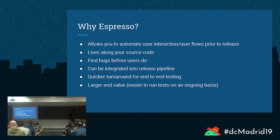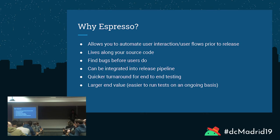And here comes the why-Espresso. For a couple of different reasons: it allows you to automate user interaction flows before release — in an ideal world, you can catch any bugs or issues prior to release. Secondly, it lives alongside your source code. In the past I've used Appium and other testing frameworks, and we always had to balance having tests in a different repository from source code and keeping them in tune. With Espresso, you use it within your source code.